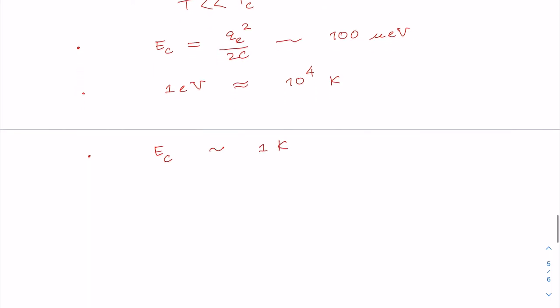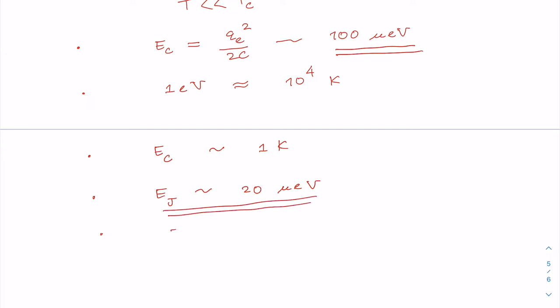The typical charging energy of a Cooper pair box is on the order of 100 micro electron volts. Since 1 electron volt is equivalent to around 10 to the power 4 Kelvin, EC in temperature units is equivalent to around 1 Kelvin. On the other hand, the Josephson energy EJ is in the range of 20 micro electron volts. Therefore EC is greater than EJ, which is needed because we took the Josephson part of the Hamiltonian as a perturbation.